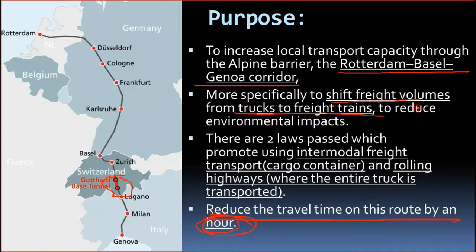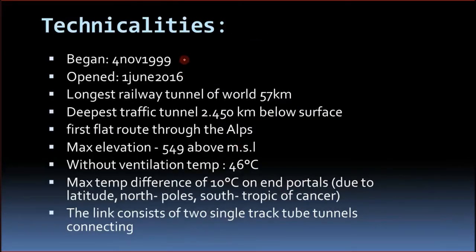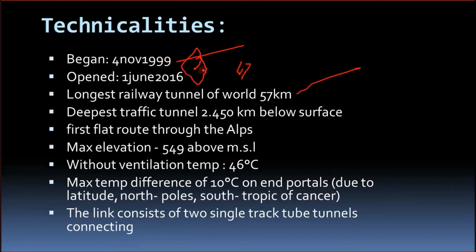The goal was to shift the load from trucks to freight trains, and to enable inter-modal drive transport — putting the whole truck or car on the train to reduce environmental impact. Construction began on 4 November 1999. The tunnel is 57 km long and took around 17 years to build. At its highest internal point, it is 549 metres above mean sea level.